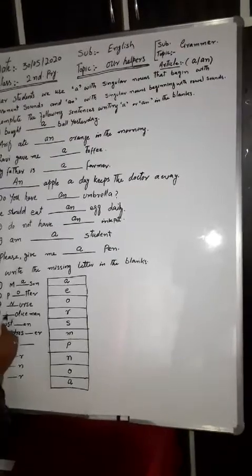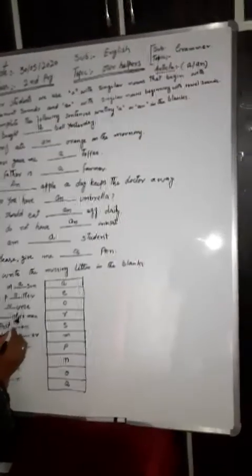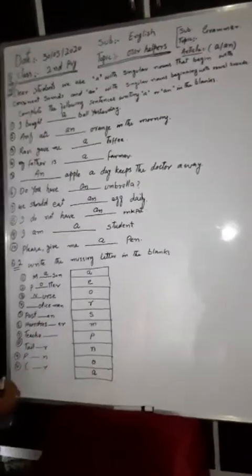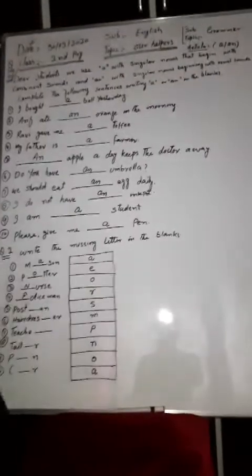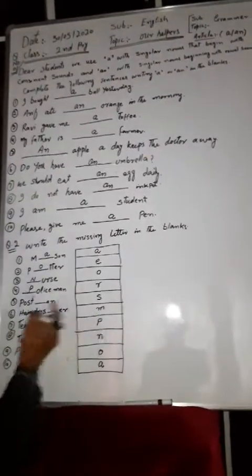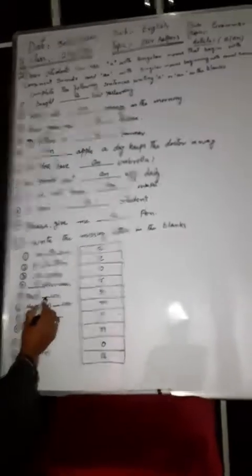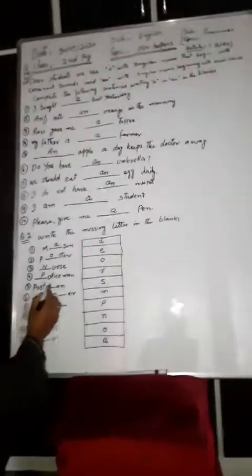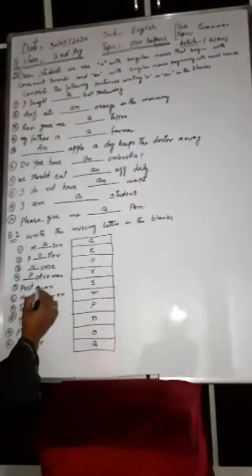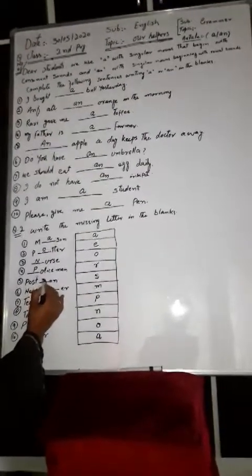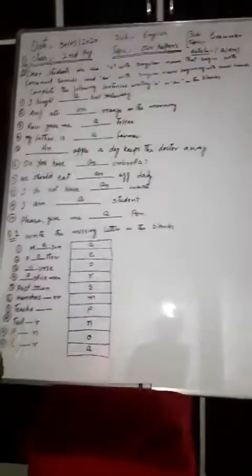P, O, L, I, C, E, M, A, N - the full word is policeman. Then P, O, S, T, post dash, A, N, N - man. This word is postman.